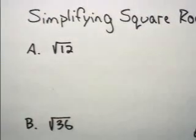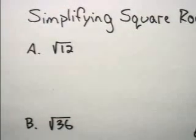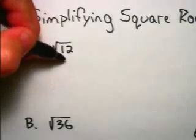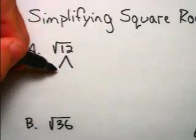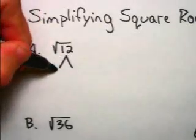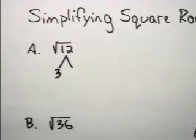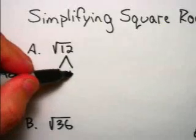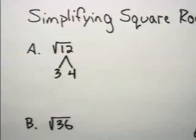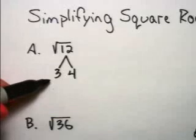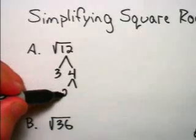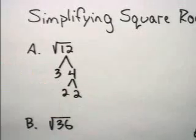Taking a look at the square root of 12, we can prime factor 12 into 3 times 4. 3 is a prime number, and 4 factors into 2 times 2.